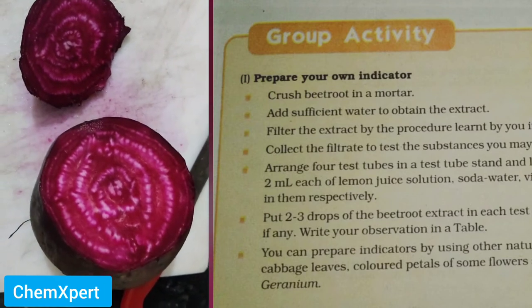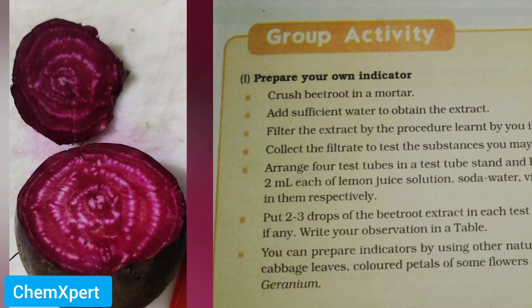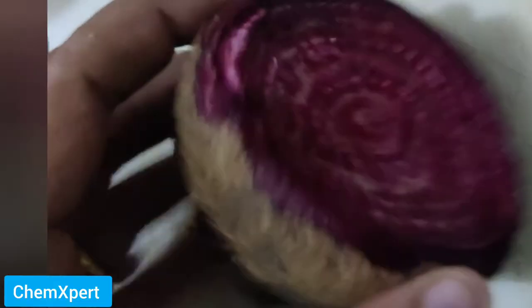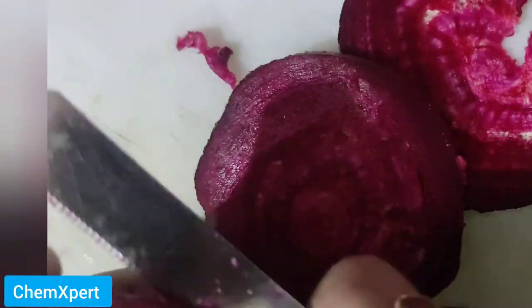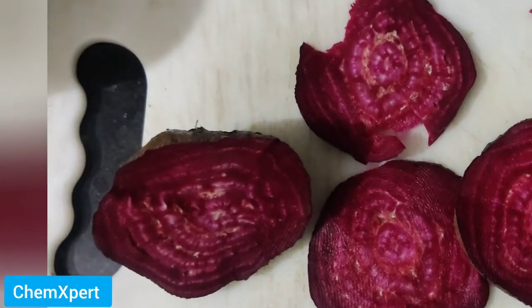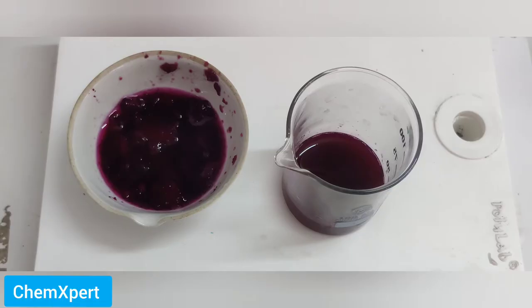For this we require a beetroot. First of all we will cut this beetroot into smaller pieces and prepare an extract from it — extract is just like preparing a juice. So we crush the beetroot so that we can easily obtain juice from it. You can do this by using a mixer. I have collected all the juice in a beaker.